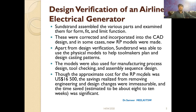Sunstrand assembled the various parts and examined them for form, fit, and function. These were corrected and incorporated into the CAD design, and in some cases new RP models were made. Apart from design verification, Sunstrand was also able to use the physical models to help tool makers plan and design casting patterns. The models were also used for manufacturing process design, tool checking, and assembly sequence planning. The approximate cost of the RP model was $16,500, but the savings realized from removing engineering and design changes were immeasurable, and the time saved — estimated at 8 to 10 weeks — was significant.